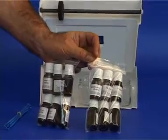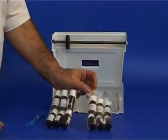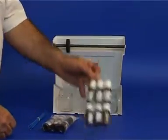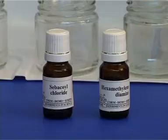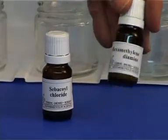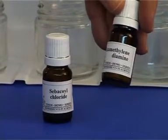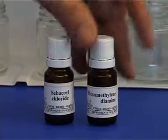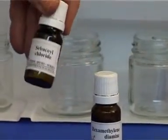This kit contains a package of 12 bottles for 6 separate experiments. Each experiment requires two bottles. One containing a solution of hexamethylenediamine dissolved in water and the second sebacoyl chloride dissolved in a kerosene-like organic solvent.